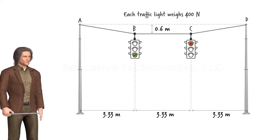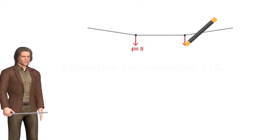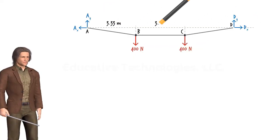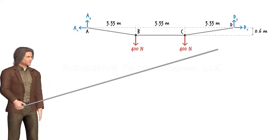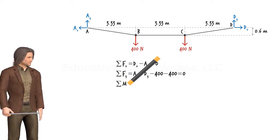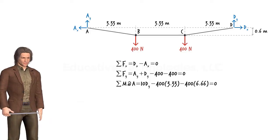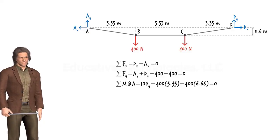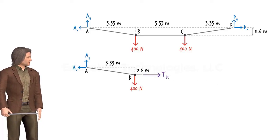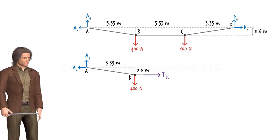We wish to determine the tension force in each segment of the cable. The solution is rather straightforward. Let's start by drawing the free body diagram of the cable. There are two support reactions at each end of the cable. Using the equilibrium equations, we can solve for the vertical reactions, but the horizontal reactions cannot be determined from the first equation since it has too many unknowns. We can cut the cable in segment BC and draw the free body diagram of the left side, since only three unknown forces appear on this free body diagram.